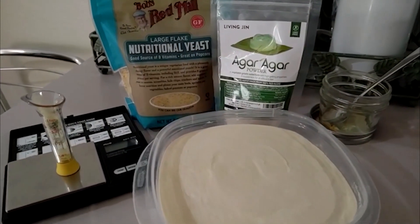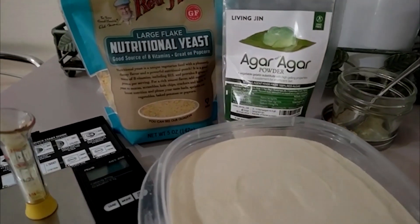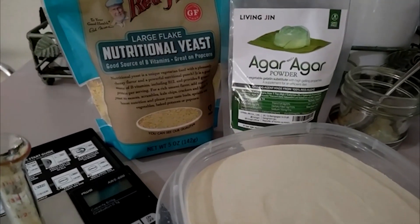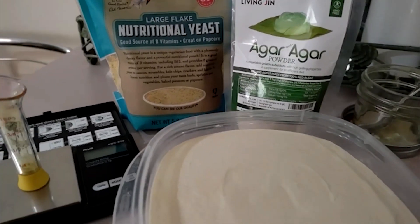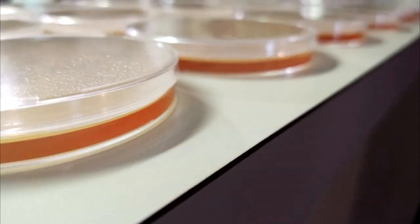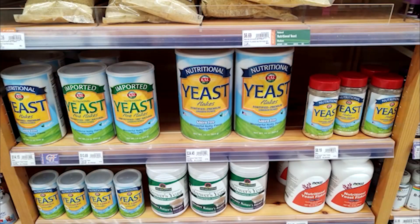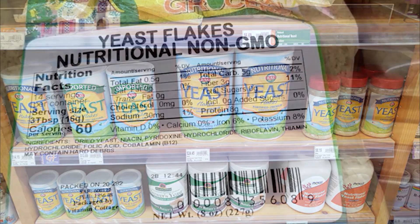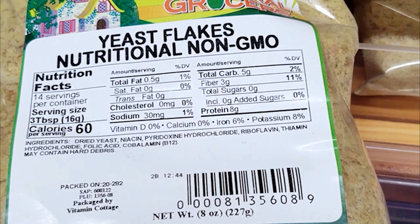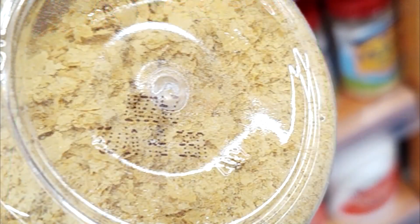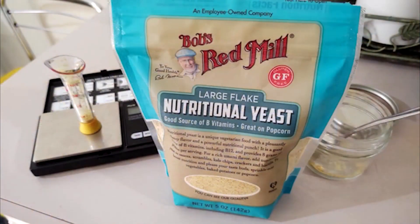MYA, or malt yeast agar, is an amazing agar recipe. This recipe provides the perfect nutritional source from the malt extract, but the addition of nutritional yeast will promote booming rhizomorphic growth in your mycelium cultures. Nutritional yeast can be found in most health stores or online in various forms from powdered to large flake. Both are good, but you want to grind it to as fine a powder as you can.